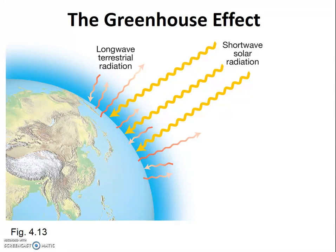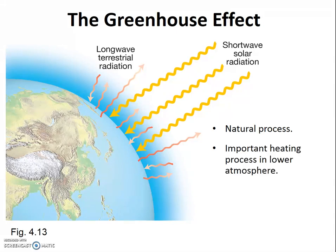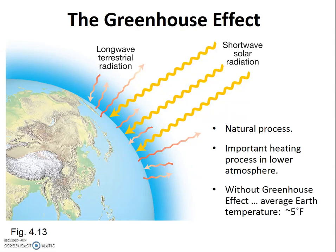Notably, this greenhouse effect is a natural process that is important for heating the troposphere. Even without humans on the planet, the greenhouse effect would be working to heat the troposphere. Indeed, without the greenhouse effect, life would not exist, at least not as we know it, as the average Earth temperature would be well below freezing, likely around 5 degrees Fahrenheit.